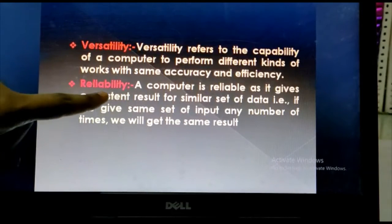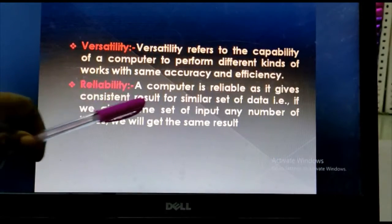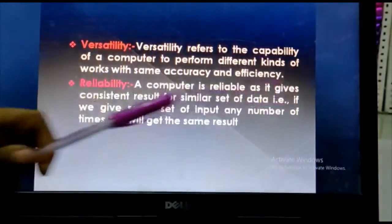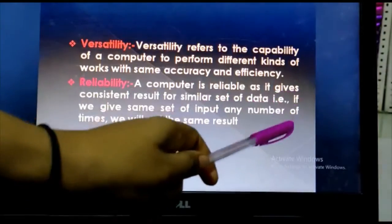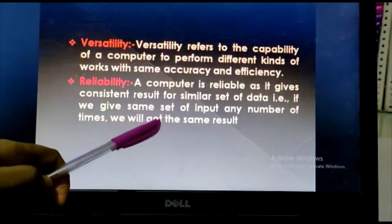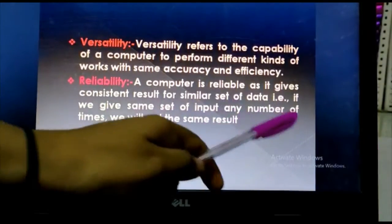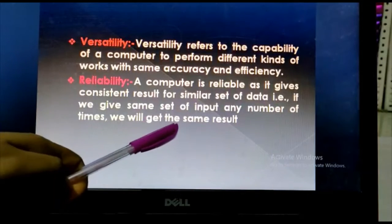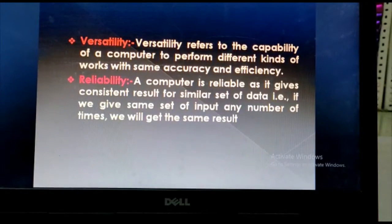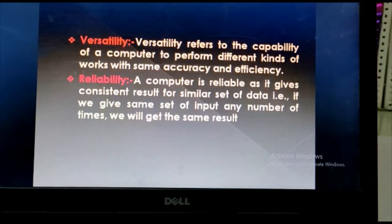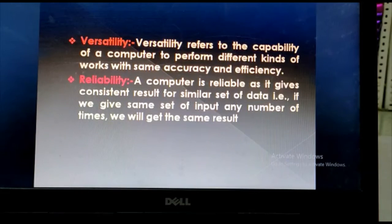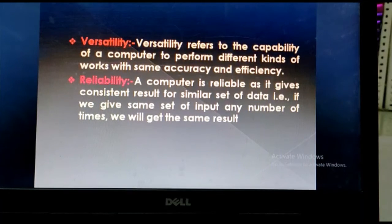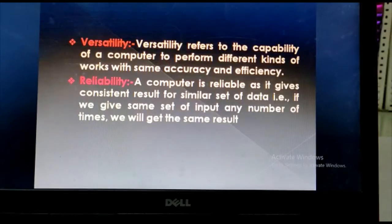Fifth is reliability. A computer is reliable as it gives consistent result for similar set of data. That is, if we give same set of input any number of times, we will get the same result. It means, if we add two numbers like 2 plus 3 for many times, then the computer gives the same result every time, that is, 5.